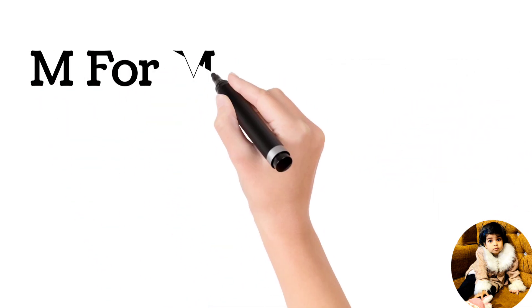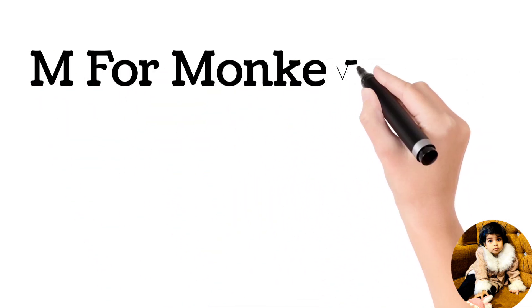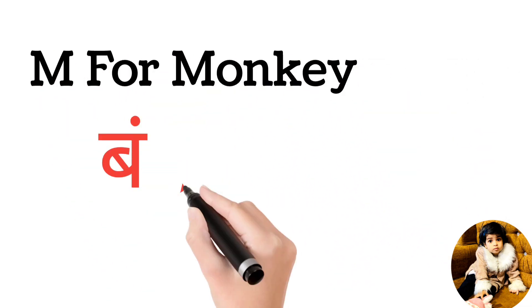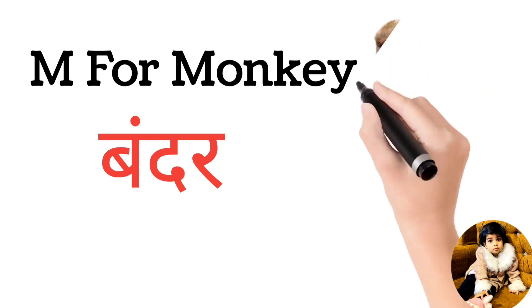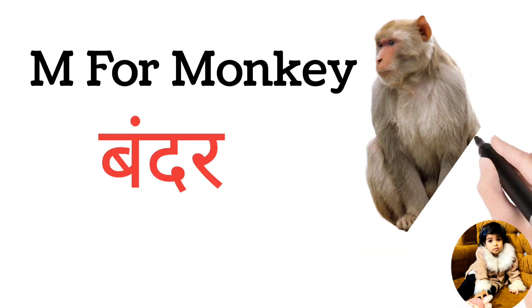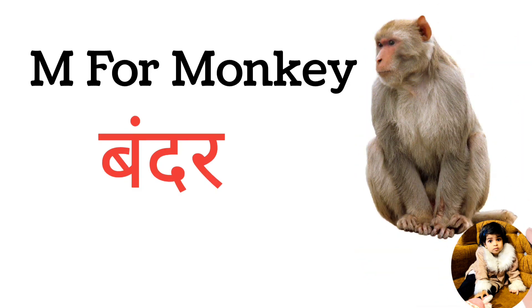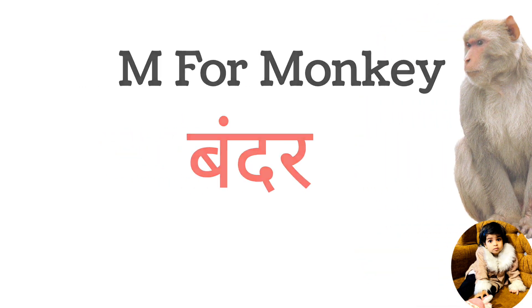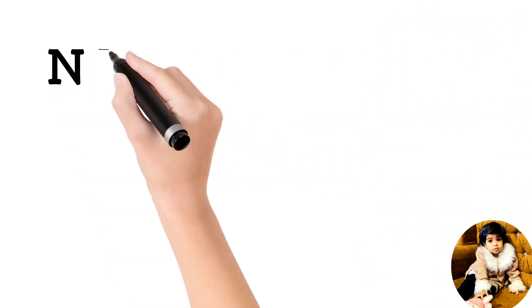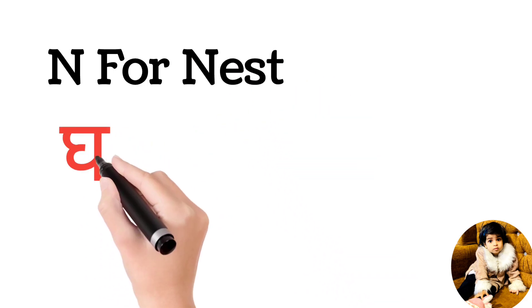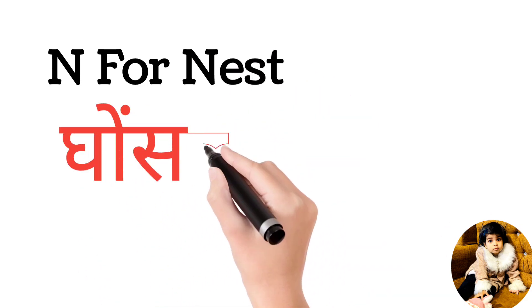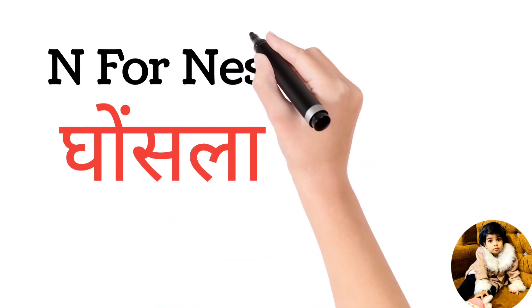M for monkey, monkey means bandar. N for nest, nest means ghosla.